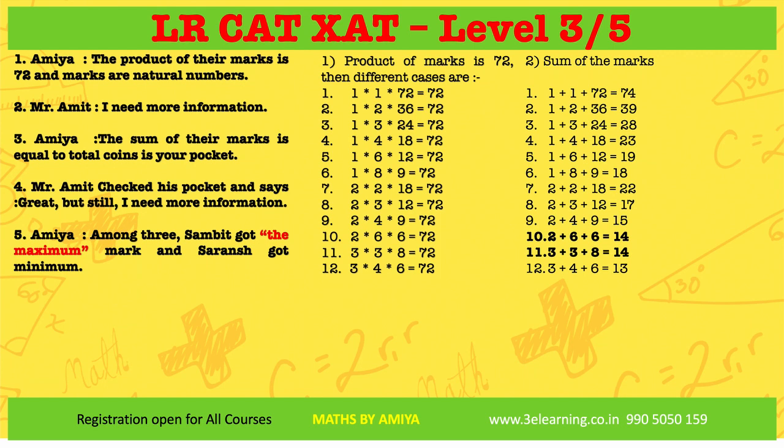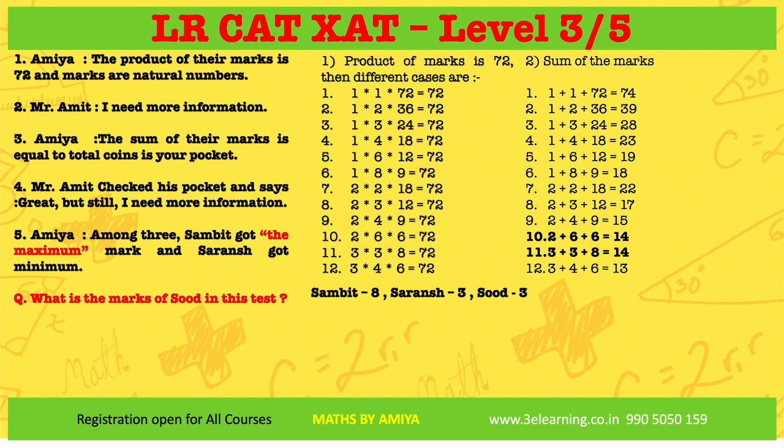Looking at the combination with sum 14: one has maximum of 6 and 6 (not unique), and another has a unique maximum of 8. So the mark combination is 3, 3, 8. Sambit got 8 marks, Saran got 3, and Sooth got 3. The question asked for Sooth's marks — the answer is 3. This is how we crack LRDI by understanding the flow of information.